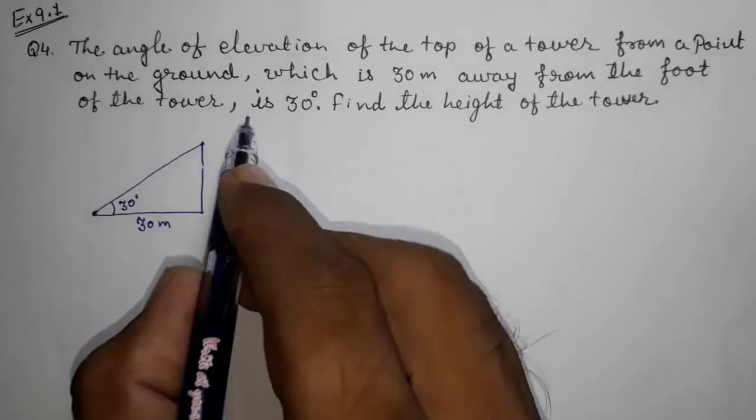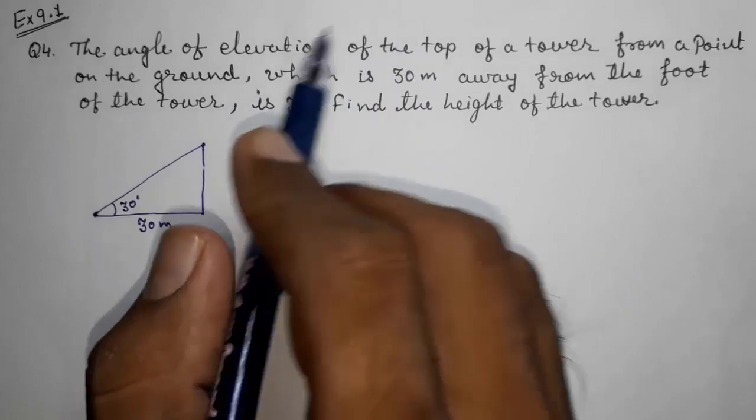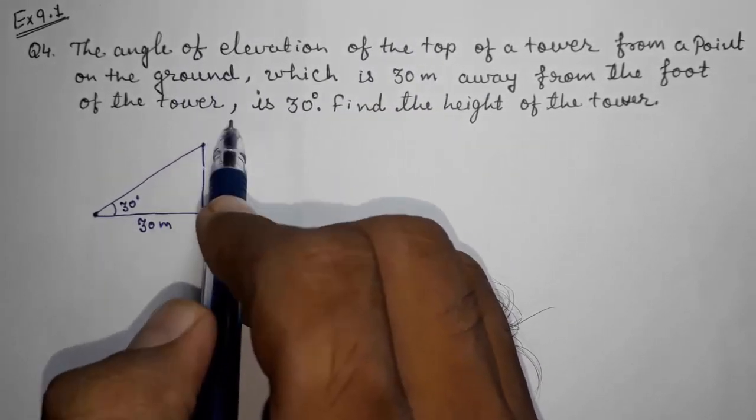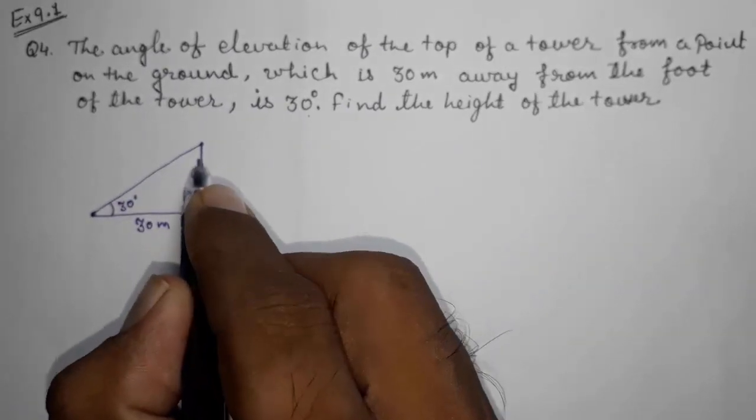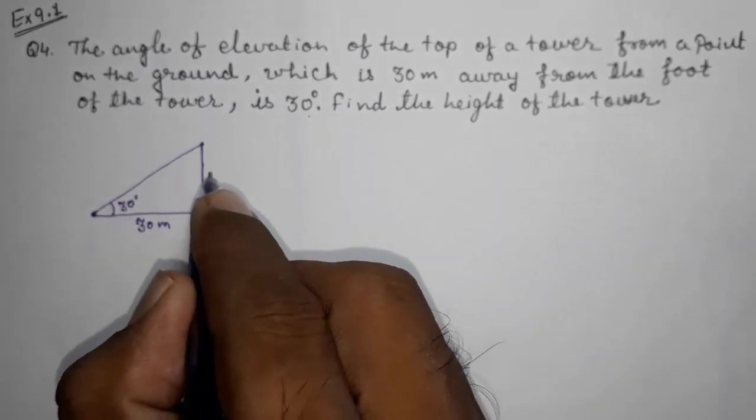So here, look, the angle of elevation is 30 degrees. Now they told us to find out the height of the tower.